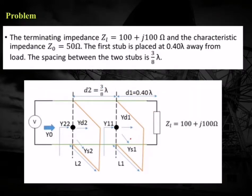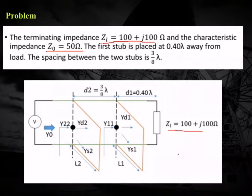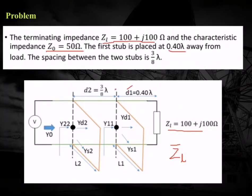To understand the concept of double stub matching, let us consider an example and solve it to find the values of l1 and l2. The terminating impedance zL is given as 100 + j100 ohms and the characteristic impedance z0 is 50 ohms. The normalized load impedance is 100/50 + j100/50 = 2 + j2. The first stub is placed at 0.40λ from the load, and the spacing between the two stubs is 3λ/8.